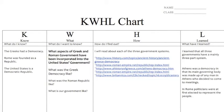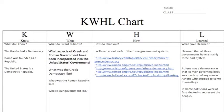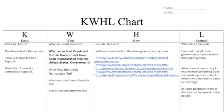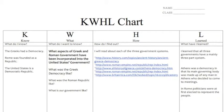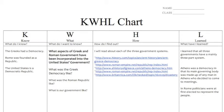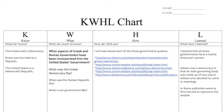Lastly came L — what have I learned? I learned that all three governments had a mainly three-part system. Athens was a democracy, in that its main governing body was made up of any man in Athens who decided to come to meetings. In Rome, politicians were at first elected to represent the people, and the people didn't directly vote for the laws.